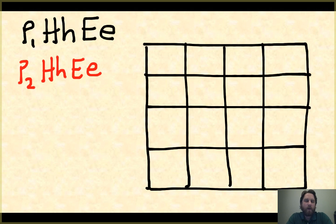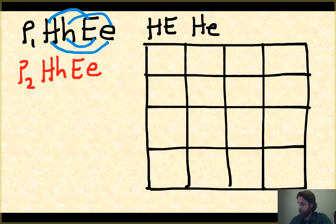What you have to do is figure out what gametes parent one and parent two can possibly form. You can use FOIL to do that: first, outer, inner, last. Parent number one can contribute this and this. So the first one of each, the outer one, the inner ones, and the last ones. Parents have to contribute one allele from each gene, and only one allele. So parent one can contribute a capital H and a capital E, and then we keep following our FOIL: first, outer, inner, and last. Those are the possible gametes for parent number one.